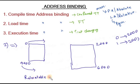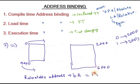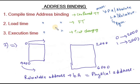The formula is: physical address equals relocatable address plus base address, where base address equals physical address of where it is loaded. So in load time binding, the program is 0 to 4000 logically, but the actual memory available is at 2000 to 6000, so it is loaded there.